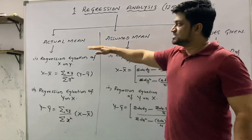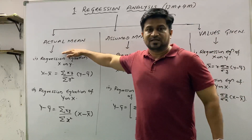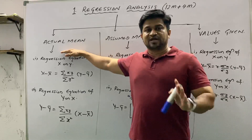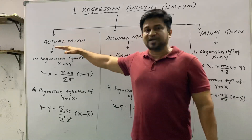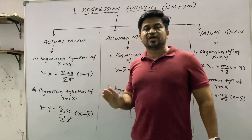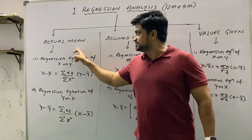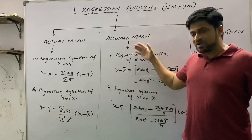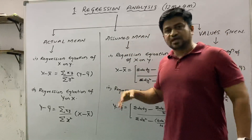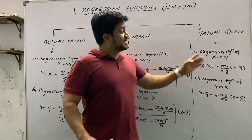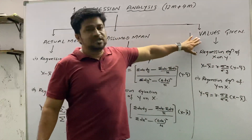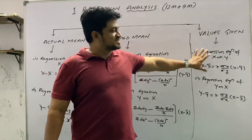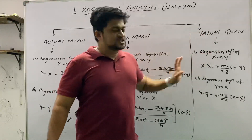What is the meaning of actual mean? Actual mean means whenever we are finding the mean of two variables, sigma x or sigma y, it should not have any decimal value. Assumed mean is used whenever we are getting a decimal value — we have to use those formulas. And in questions where values are directly given to us, like mean, standard deviation of x, standard deviation of y, we will use different formulas.